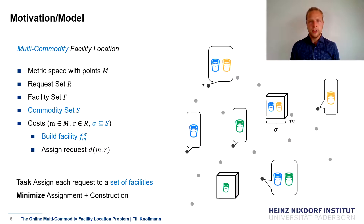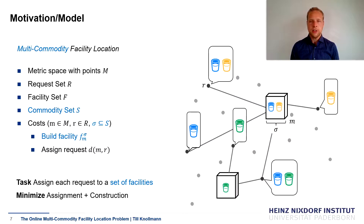Here we are given additionally a set of commodities S, and each request asks for a subset of commodities. Also, the facilities offer a subset of commodities — a configuration — which we call Sigma. Whenever you place a facility at a point M in a configuration Sigma, your cost is F_{M,Sigma}. The task is to assign each request to a set of facilities jointly offering all the requested commodities. For example, a request for a blue and green drink must pay the assignment cost to a facility offering green and one offering blue. A request for blue and yellow that can get all commodities from a single facility only pays the connection cost once.